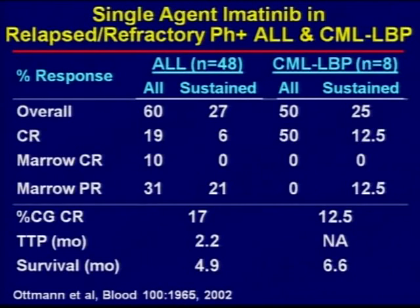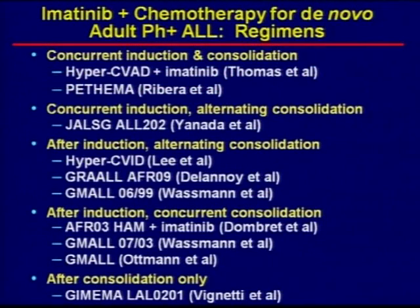Imatinib came and changed CML, but was much slower to change the paradigm in ALL, only because single-agent therapies were not as successful. There were responses seen — sustained response of about 30% — with very little complete marrow CRs. However, when combined with chemotherapeutic regimens, trying to incorporate it into induction and consolidation, such as in hyper-CVAD or several other group regimens, there was promise. We'll look at a snapshot of the data available so far.